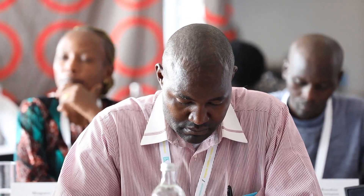Some of you are visual, some need words, some need to hear. I grabbed a visual from the BBC illustrating CT concepts. In the diagram, decomposition takes your big problem and breaks it into two smaller problems, then two more, and so on until you have eight pieces. Pattern recognition looks for patterns after breaking the problem down. Abstraction and algorithm design can go in either order — abstraction applies your solution to other areas, and algorithm is your step-by-step recipe.